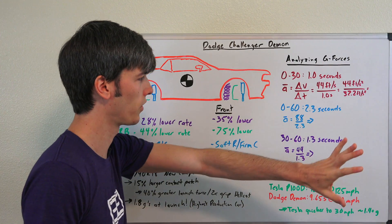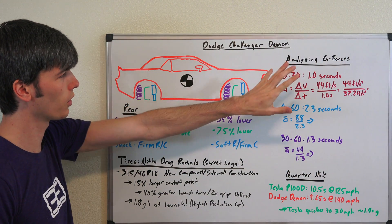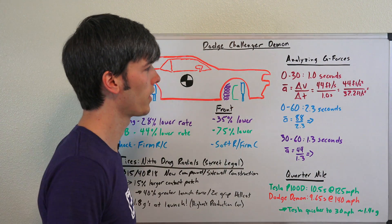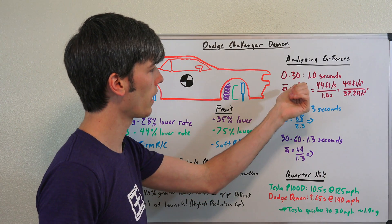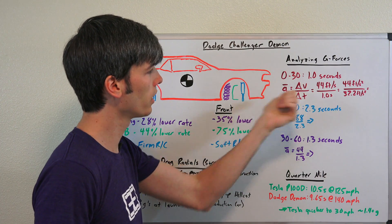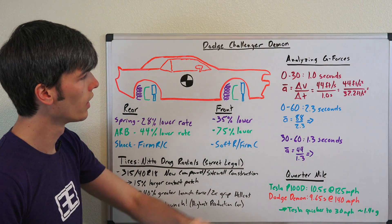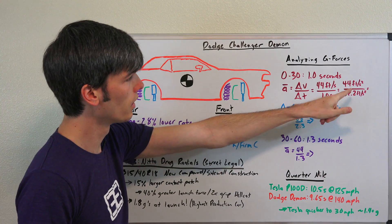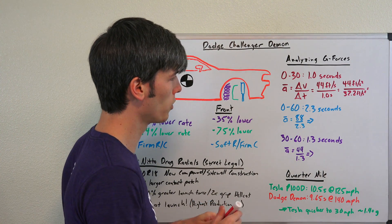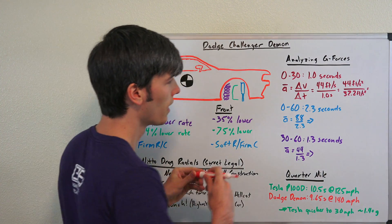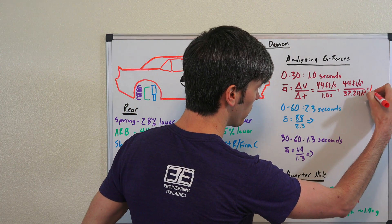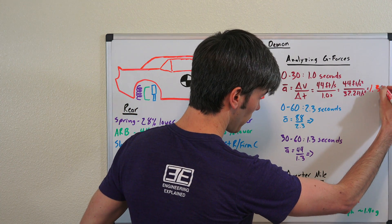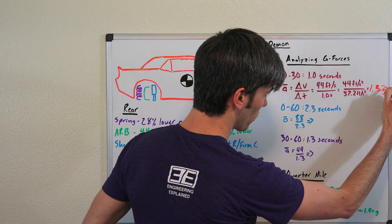Analyzing the G-forces here. So looking at the 0 to 30 time of 1 second, if we take the average acceleration, that's equal to the difference in velocity divided by how much time that takes. So 30 miles per hour equals 44 feet per second divided by 1. 44 divided by 32.2 feet per second. That gives us 1.37 G's.